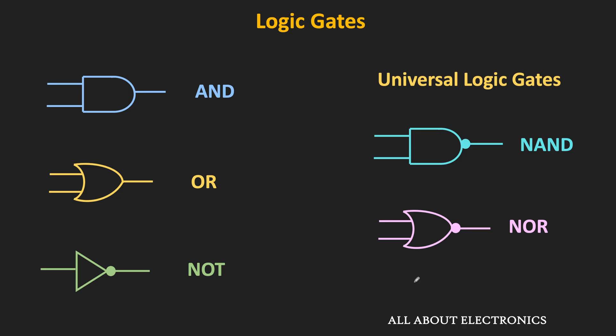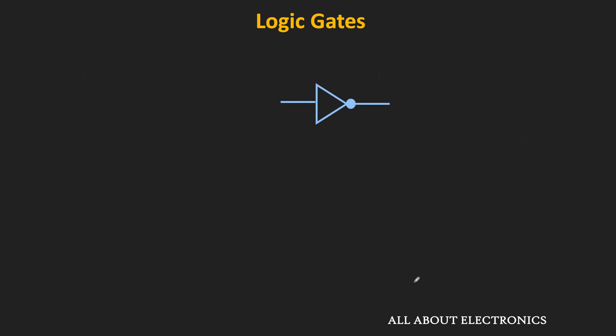So far during our discussion of the logic gates and the logic gate based circuits, we have assumed that logic 1 means some high voltage level and logic 0 means some low voltage level. So if the supply voltage of the logic gate is equal to 5V, then generally we assume that logic 1 is equal to 5V and logic 0 means 0V.